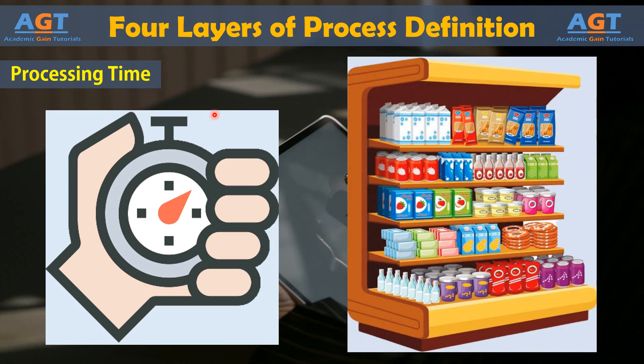A retail chain might create a process map for restocking a certain area. The process documentation notes an average time of two hours to fully restock the shelves in the defined area. In an effort to obtain more data about the process, a Six Sigma team observes employees actually performing job functions in real time at various times of day for two weeks.